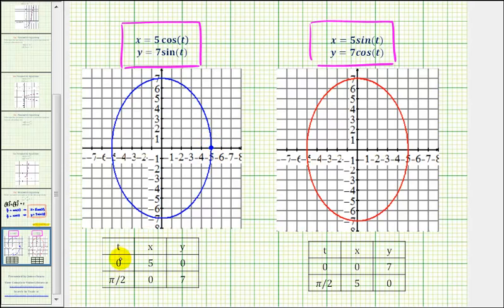And then when t increases to pi divided by 2, the point would be 0, 7, or this point here. So the ellipse would be traced out counter-clockwise in this direction.